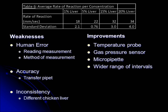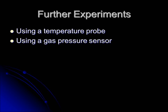This indicates inconsistency in the methods of conducting this lab. Weaknesses in the experiment included human error in reading the volume of liquid in the graduated cylinder, as well as the method of recording the rate of reaction. This can be improved by using a temperature probe or a gas pressure sensor. Another weakness included inaccuracy due to the use of transfer pipettes, which can be improved by using a micropipette instead. Inconsistency also played a role; the lab should be performed on the same day, ensuring the use of the same chicken liver. A wider range of intervals should be used to produce more significant results. Further experiments include using a temperature probe or a gas pressure sensor to increase the accuracy of the results.